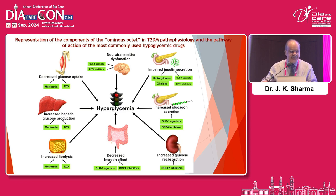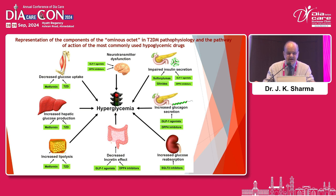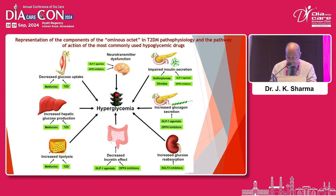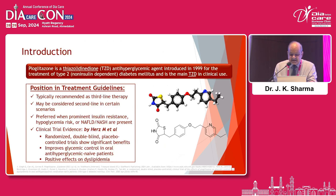This is a very important slide representing the various components of the ominous octet in type 2 diabetes — pathophysiology and the pathway of action. On the left side, decreased glucose uptake, and the drugs that address insulin resistance: metformin and thiazolidinediones. Pioglitazone is the key thiazolidinedione, also addressing increased hepatic glucose production and increased lipolysis. So three components in the pathophysiology are addressed by pioglitazone. It is an anti-hyperglycemic agent introduced in 1999 for type 2 diabetes and is the main thiazolidinedione.